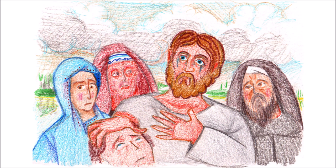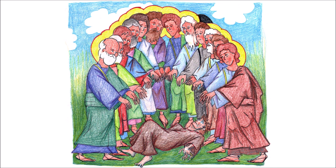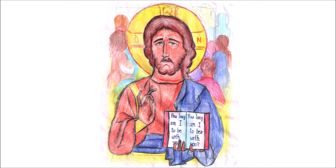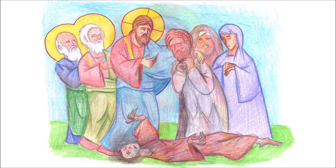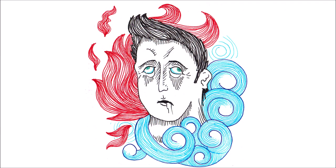Then one of the crowd answered and said, Teacher, I brought you my son who has a mute spirit. And wherever it seizes him, it throws him down. He foams at the mouth, gnashes at his teeth, and becomes rigid. So he spoke to your disciples that they should cast it out, but they could not. He answered him and said, O faithless generation, how long shall I be with you? How long shall I bear with you? Bring him to me. Then they brought him to him. And when he saw him, immediately the spirit convulsed him, and he fell on the ground and wallowed, foaming at the mouth. So he asked the father, How long has this been happening to him? And he said, From childhood. And often he has thrown him both into the fire and into the water to destroy him. But if you can do anything, have compassion for us and help us.